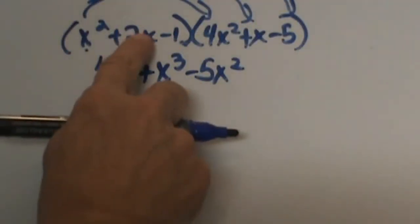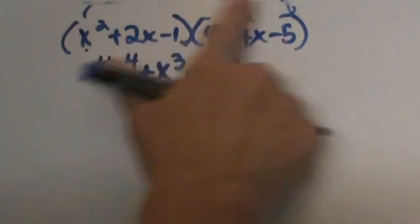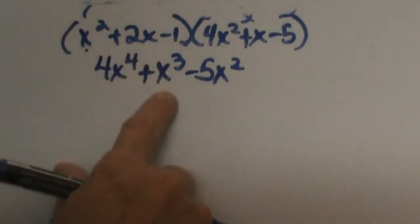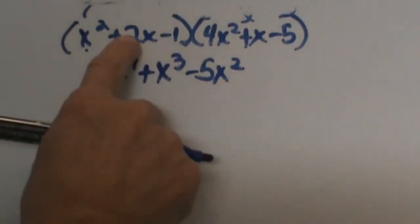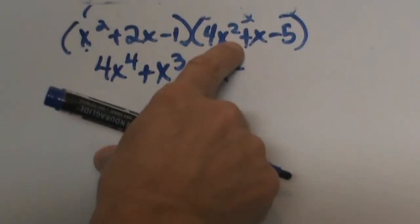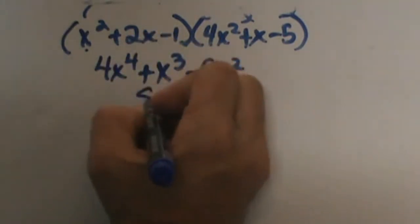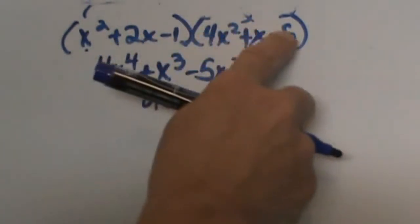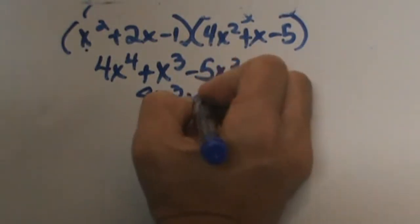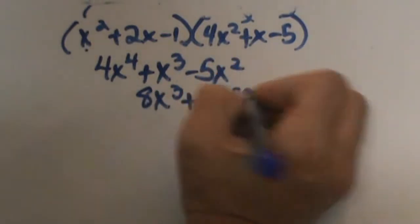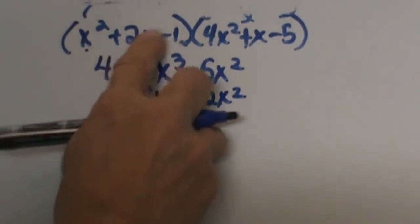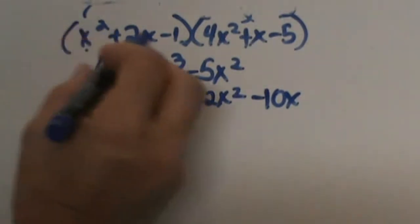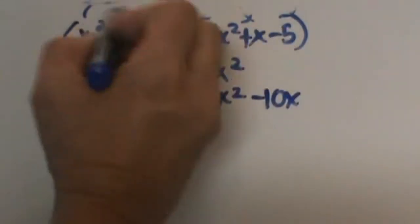Now let's go back and distribute 2x to each of the terms. I'm going to write this underneath to make them line up — typically you start under the second one. 2x times 4x squared gives me 8x cubed. 2x times x gives me positive 2x squared — remember, add exponents. 2x times negative 5 is negative 10x. Okay, we're done with the second term, we've distributed it all the way in.